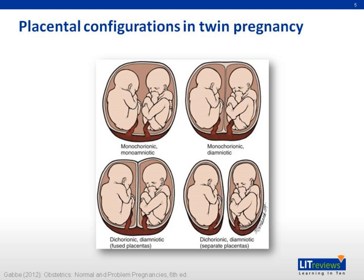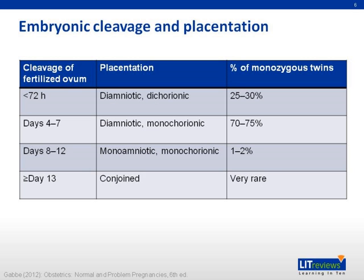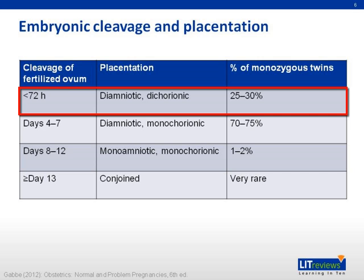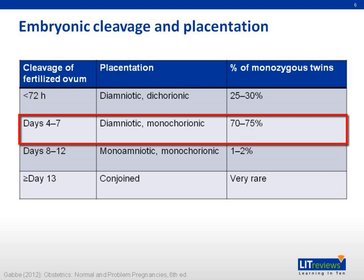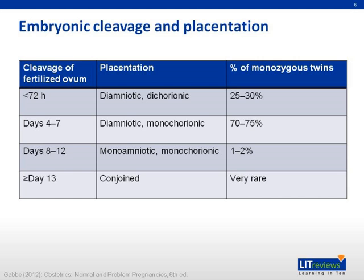Depending on the time at which you have cleavage of the fertilized ovum, you'll have a different placentation for the twin pregnancy. Cleavage at less than 72 hours following fertilization will yield a diamniotic dichorionic, or DADC, placentation. Whilst cleavage between days four to seven will yield a diamniotic monochorionic, or DAMC, placentation, forming the majority of monozygous twins. And as you see, if you have later and later cleavage of the ovum, eventually you'll have conjoined twins, where cleavage of the ovum occurs after day 13 — the rarest of the monozygous twin placentations.